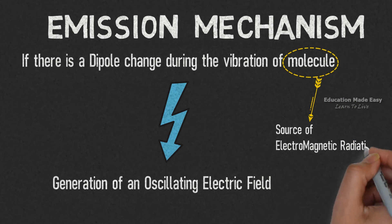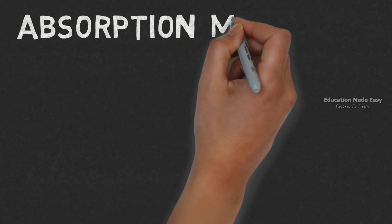This is the mechanism of emission in IR spectroscopy. Now let us learn about absorption mechanism.